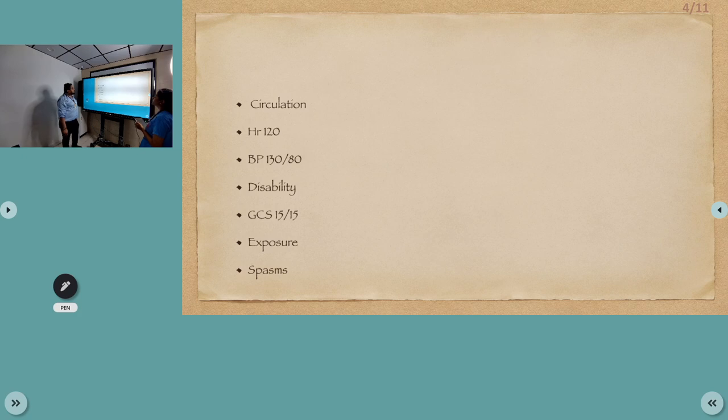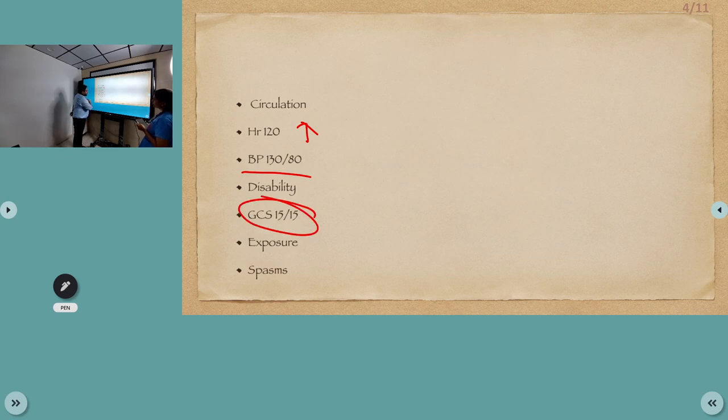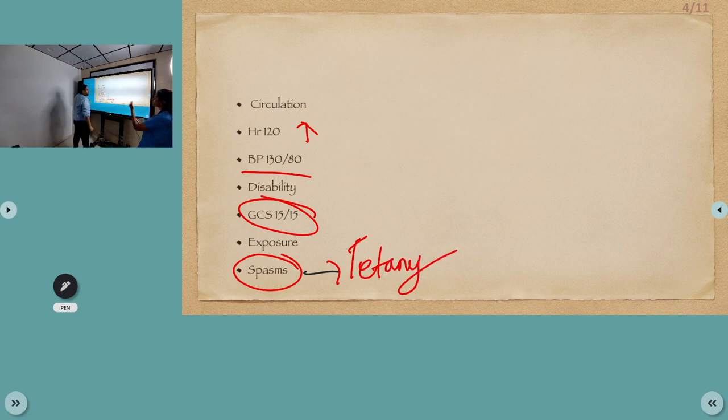Coming to the circulation: all the peripheral pulses were palpable and the heart rate was at the higher side of 120. Coming to the BP, it was 130 over 80, so he is not having hypotension. GCS was 15 by 15. Exposure: bilateral spasms were visible, bilateral carpopedal spasm. While taking the blood pressure, we could elicit the spasm - Trousseau's sign.